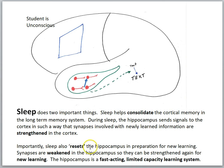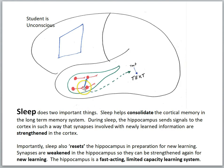Sleep also resets the hippocampus in preparation for new learning. Synapses are weakened in the hippocampus so they can be strengthened again for new learning. We can think of the hippocampus as a fast-acting, limited capacity learning system. One reason for transforming a memory to become more cortically dependent is that the hippocampus needs to be reset for new learning. The learning that happened the previous day caused strengthening in certain hippocampal synapses, and now they have to be weakened during sleep so the hippocampus can be prepared for new learning — which is good, because the brain is undergoing consolidation to strengthen the cortical component of that memory.